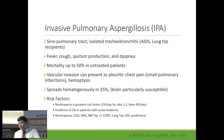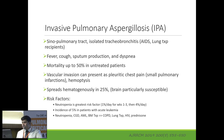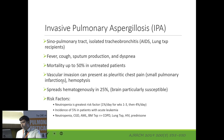Invasive pulmonary Aspergillosis involves the sinopulmonary tract — not limited to the lungs; sinuses are also involved — or isolated tracheobronchitis, most commonly seen in HIV-positive patients and lung transplant recipients. Presentation is similar to other infections: fever, cough, sputum production, dyspnea. Mortality is very high, up to 50% in untreated patients. Vascular invasion may cause infarctions or hemoptysis, and dissemination rate is about 25%, especially to the brain.